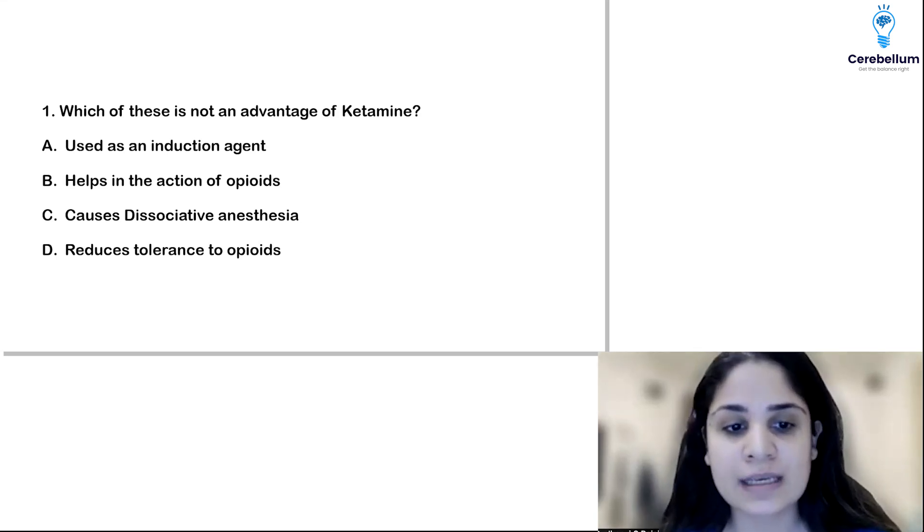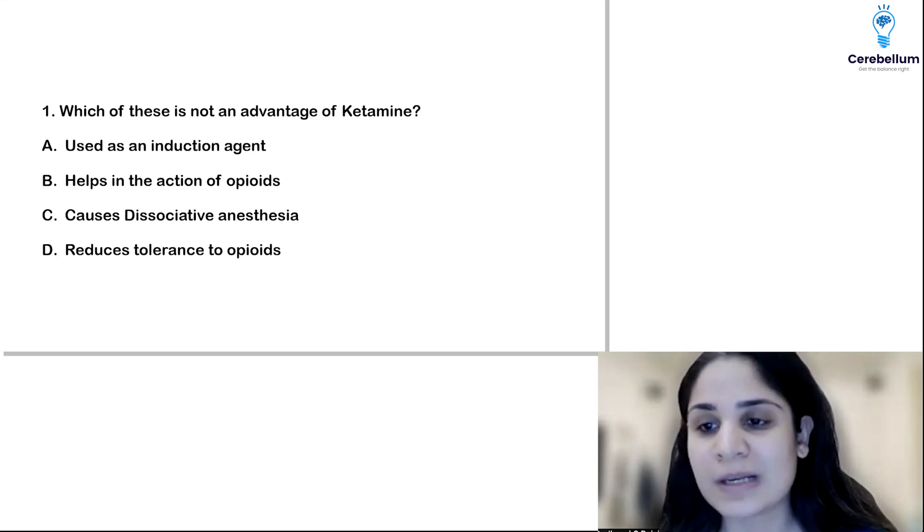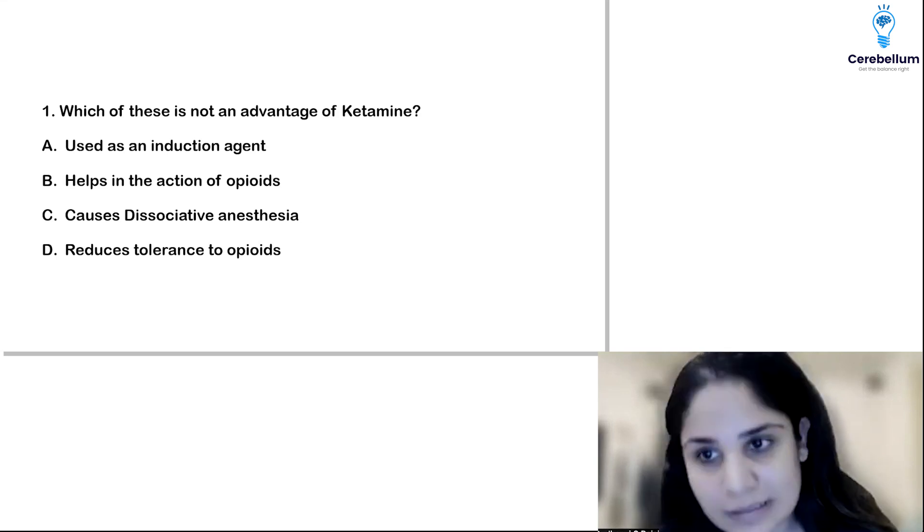And option D reduces tolerance to opioids. A lot of people are saying this is the answer, but that's not correct. Why?